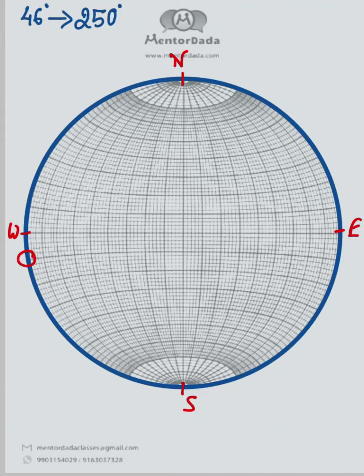So first we will have to mark the dip direction. And as we know, it is dipping 46 degrees towards 250 degrees. Our next step would be to take this dip direction, that is 250 degrees, to the east-west line.